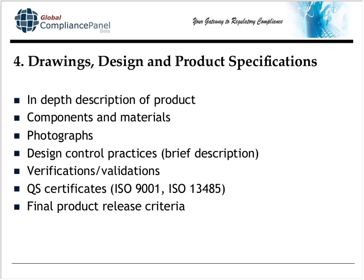Section four of the technical file is the more product-specific information: an in-depth description of the product, all of the components and materials. Some firms choose to put photographs in their technical files. A brief description of your design control practices — you can't just reference your SOP, but several sentences on how you design control, whether you go by phase gate and what your phases are. Any verifications or validations are a great opportunity to reference by validation number, if that's how your company does that. Your notified body will want to see your final product release criteria — that's the QA inspection of the finished device.